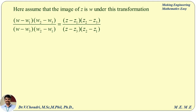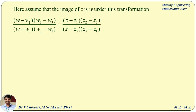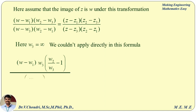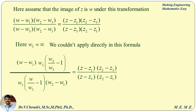An easy way to remember the formula: numerator follows 1, 2, 3 and denominator follows 3, 2, 1. Now since w3 equals infinity, we cannot apply this formula directly. So we are going to modify it by taking w3 from the numerator outside and w3 from the denominator, so that w3 cancels from numerator and denominator.